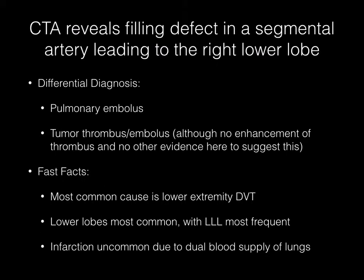This axial CT angiographic image of the chest demonstrates a filling defect in a segmental artery leading to the right lower lobe. The differential diagnosis includes pulmonary embolus and tumor thrombus or embolus. However, there is no enhancement of the thrombus on this image and no other evidence to suggest anything other than a bland pulmonary embolus.